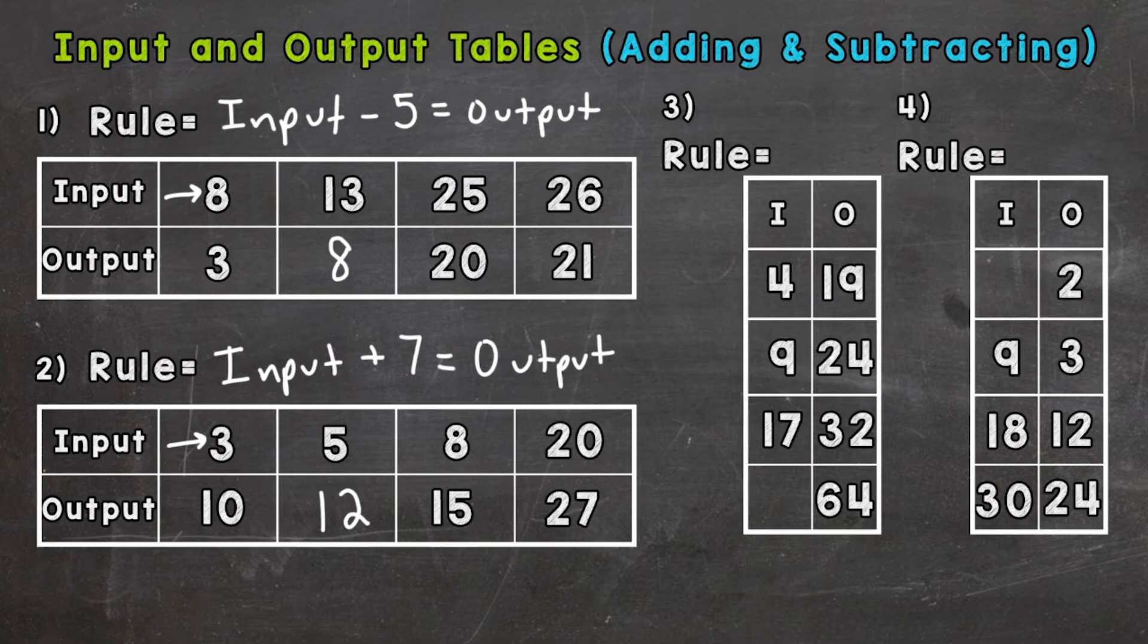Number 3: this is a vertical table, so it goes up and down, but it's the exact same thing we did for numbers 1 and 2. So let's start with our 4 and the corresponding or matching 19. How do we get 4 to equal 19, 9 to equal 24, 17 to equal 32?